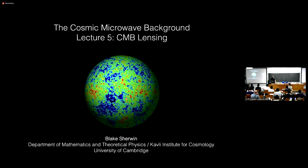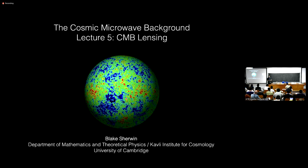In the last four lectures, we've talked about the CMB and mainly focused on it as a way to learn about the early universe, the properties of perturbations on the last scattering surface, and even mechanisms like inflation. But another increasingly active area of research is to use the CMB as a probe of large-scale structure — basically using the CMB as a backlight that illuminates the distribution of dark matter and gas in the universe today. That's what I'll be focusing on today, although it has lots of implications for the early universe as well.